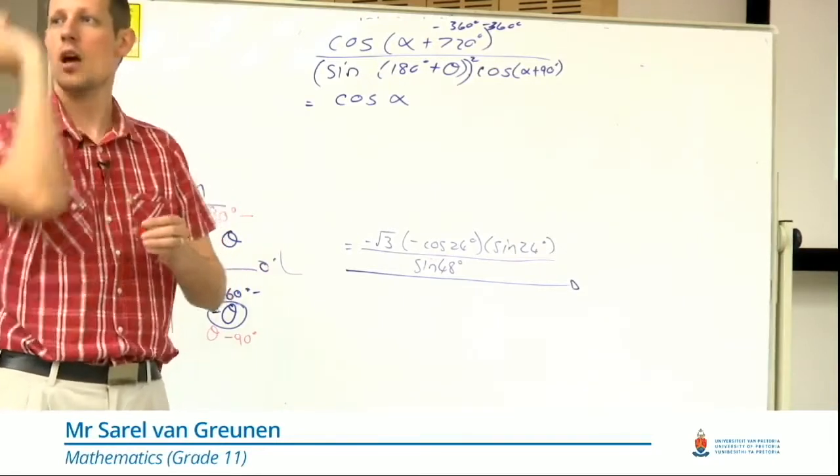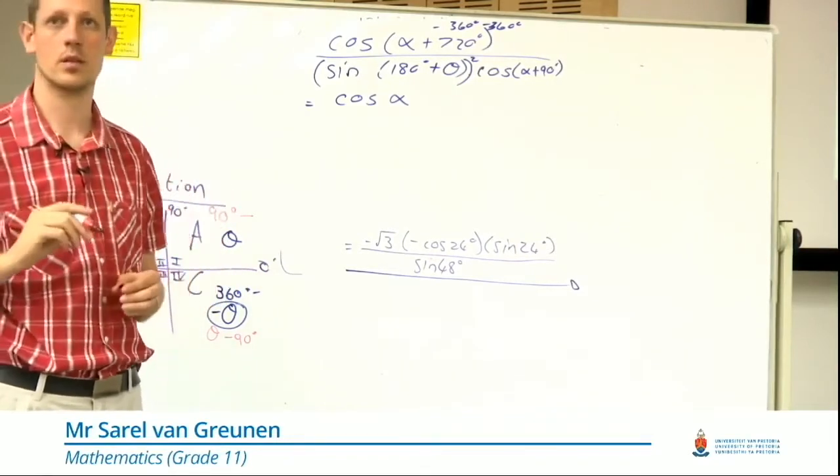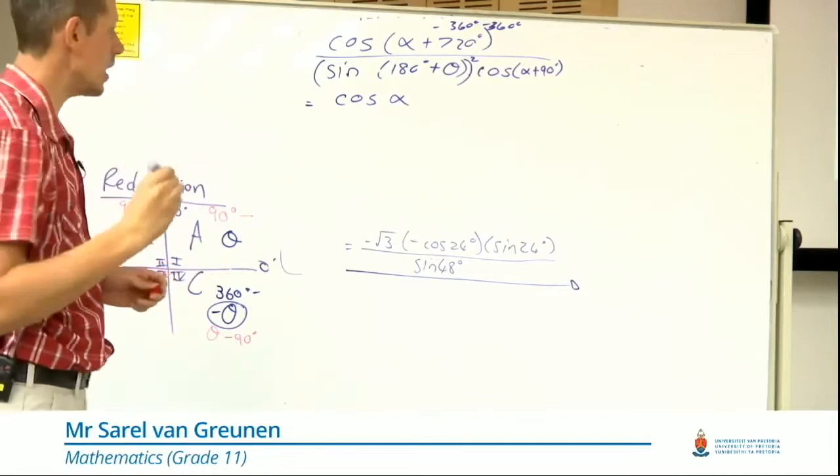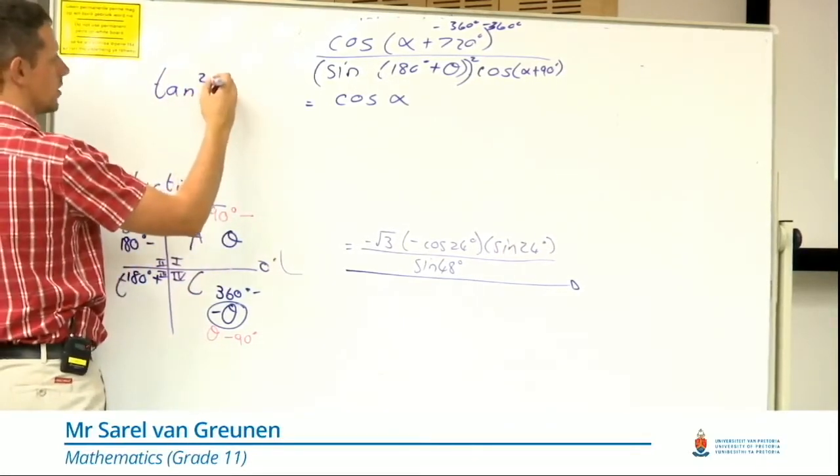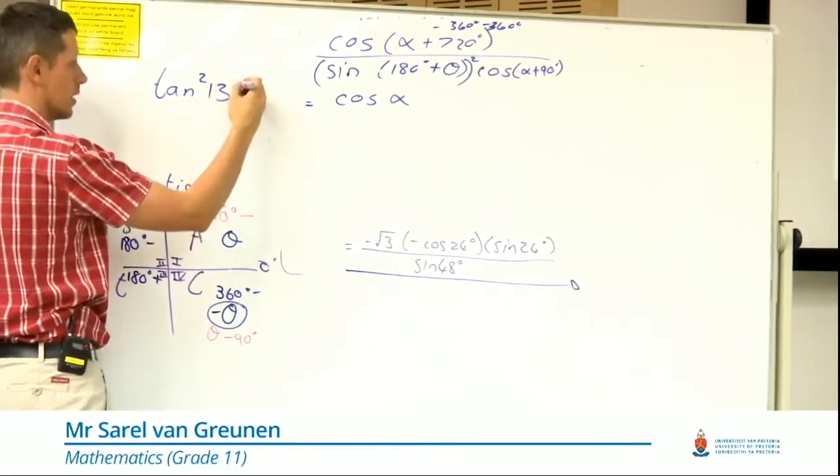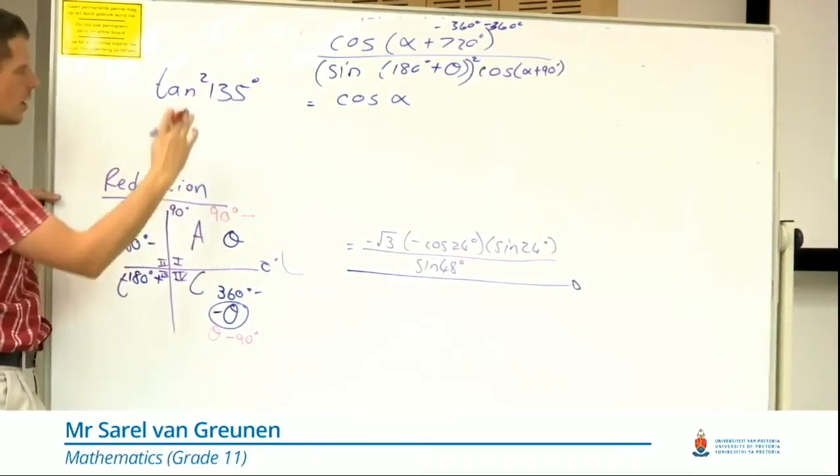Move the square outside. The reason I want you to do this is if you, for instance, get tan squared 135, a lot of my students go and say, okay,